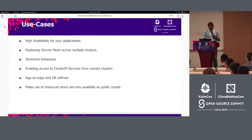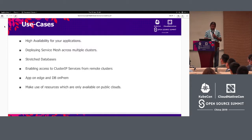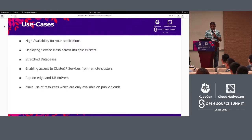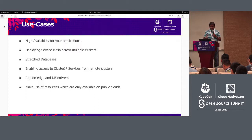Another interesting use case is enabling access to cluster IP services from remote clusters. Normally, Kubernetes cluster IP services are only accessible within your local cluster, and we are looking at solutions where you can access them from a remote cluster. There's also the use case of having a database on-prem and your front-end application on the edge, closer to customers. Another use case is deploying temporary applications on public clouds to make use of special hardware not available on-prem. These are not exhaustive but represent the use cases we had in mind.